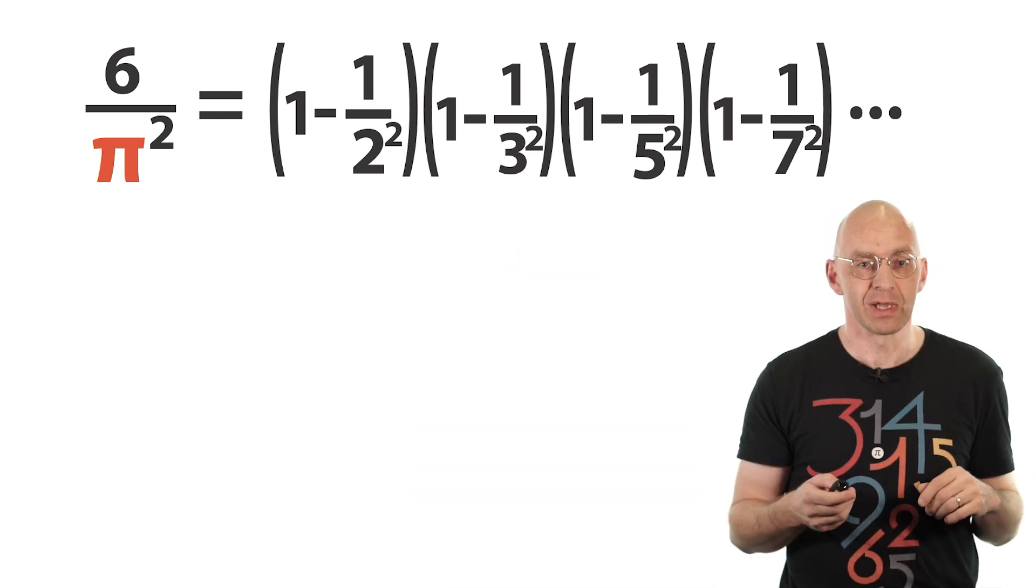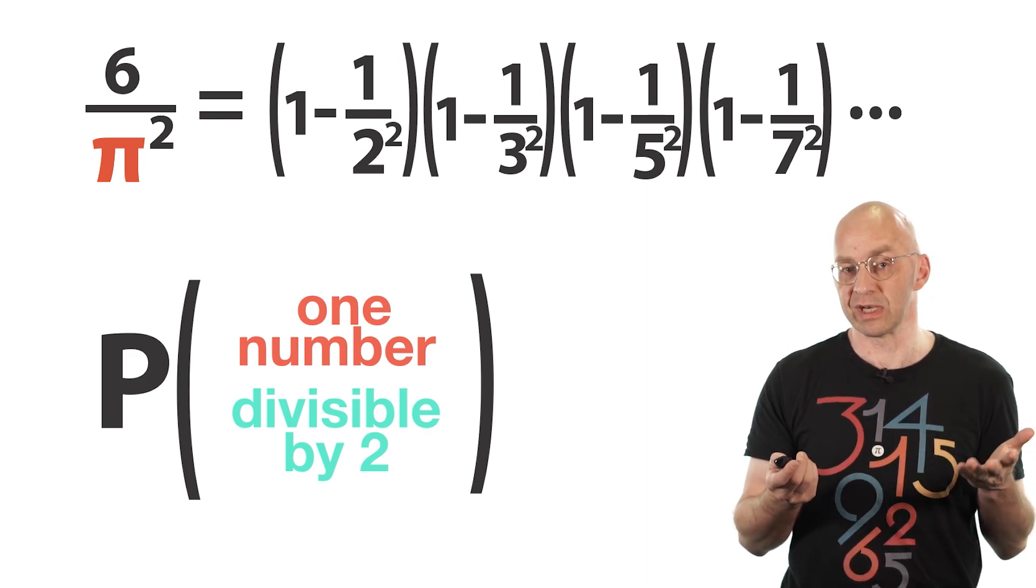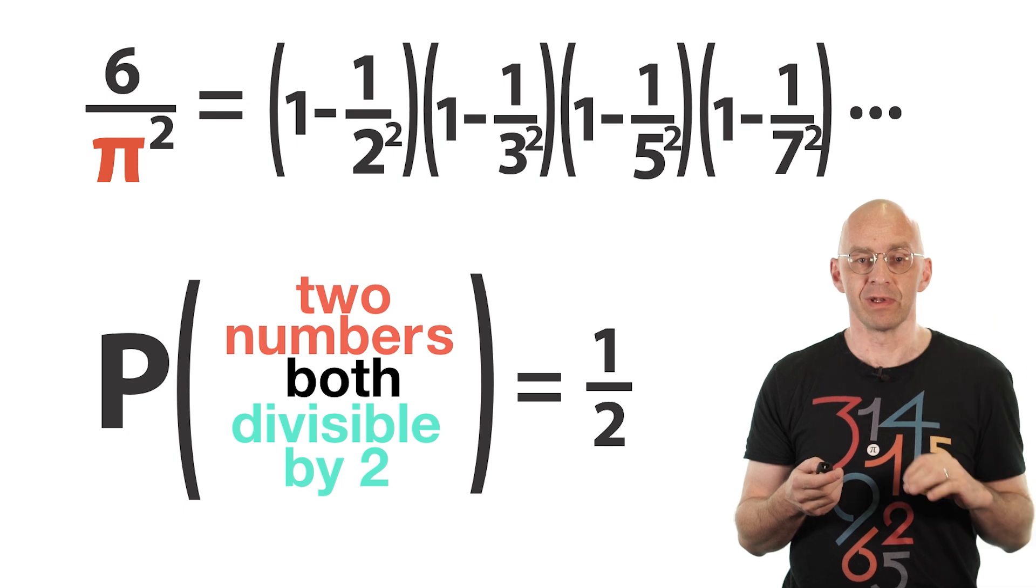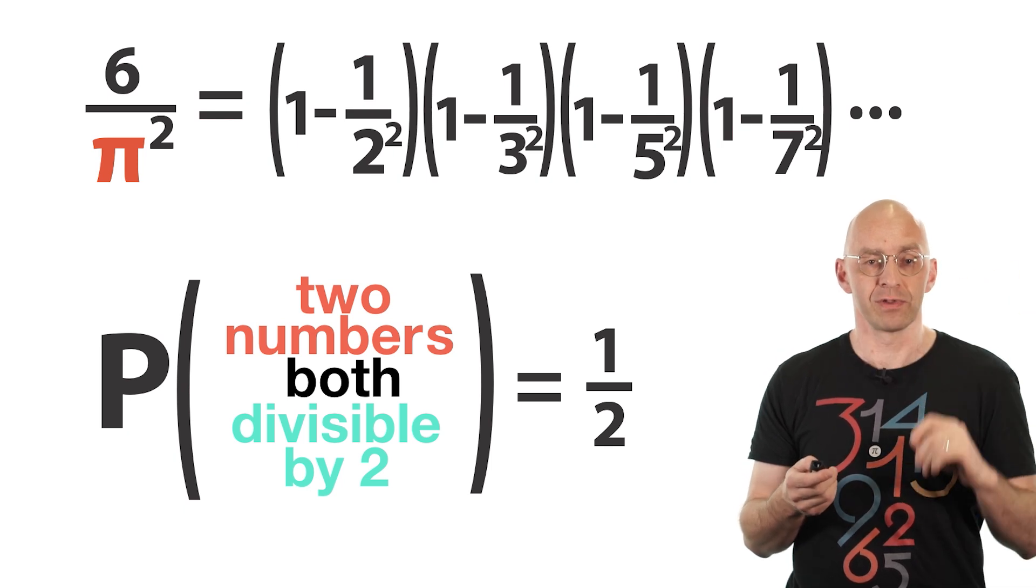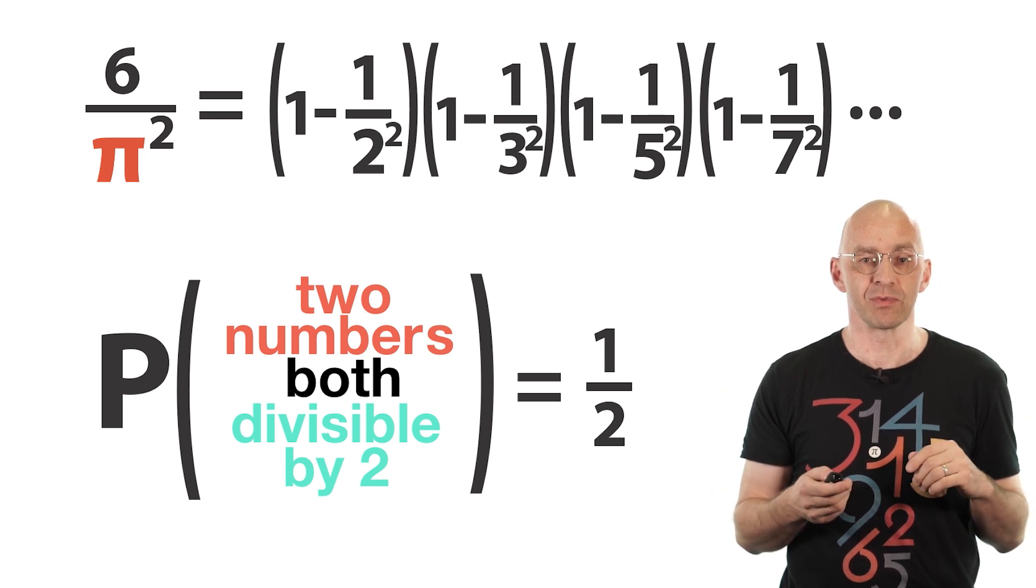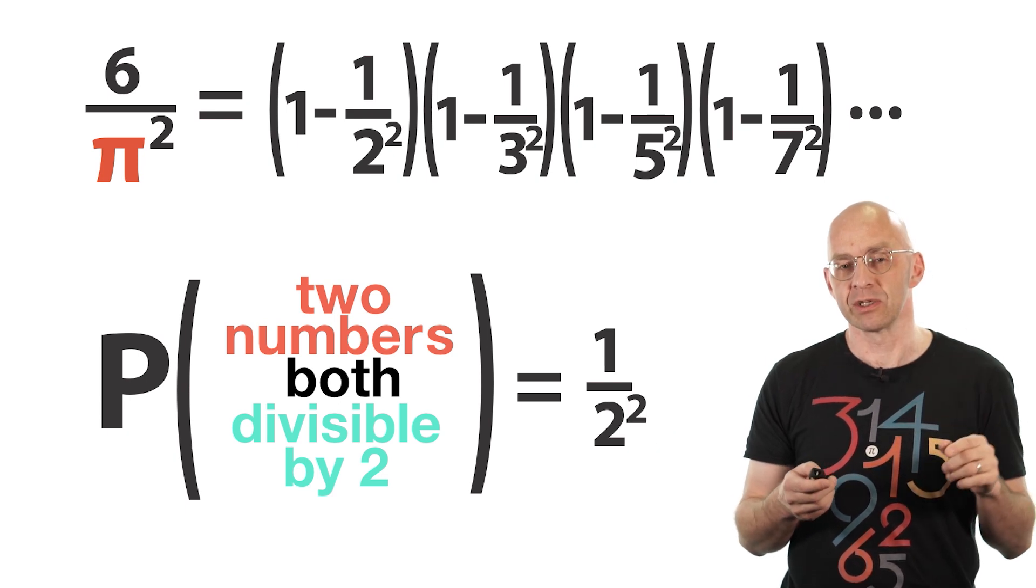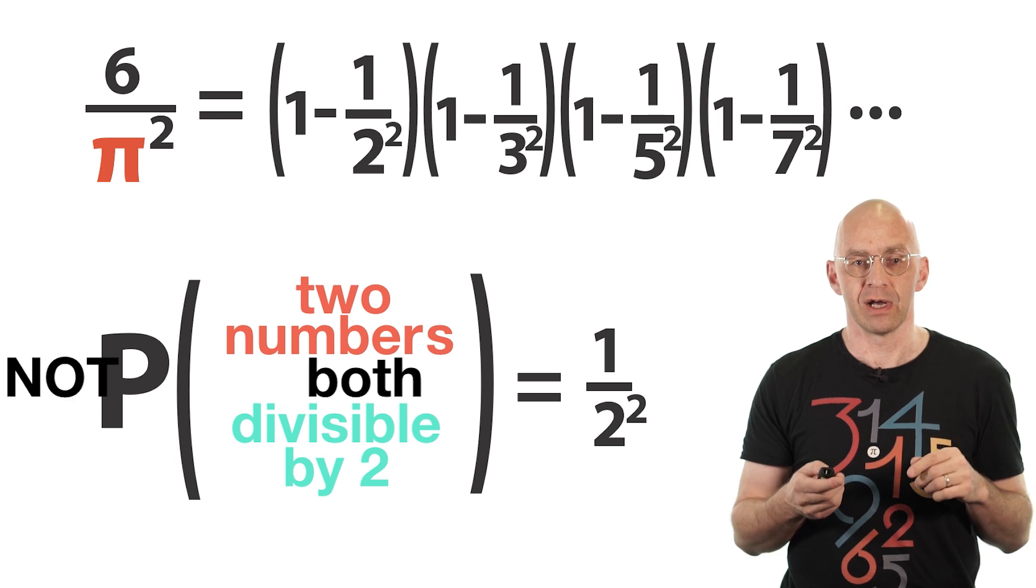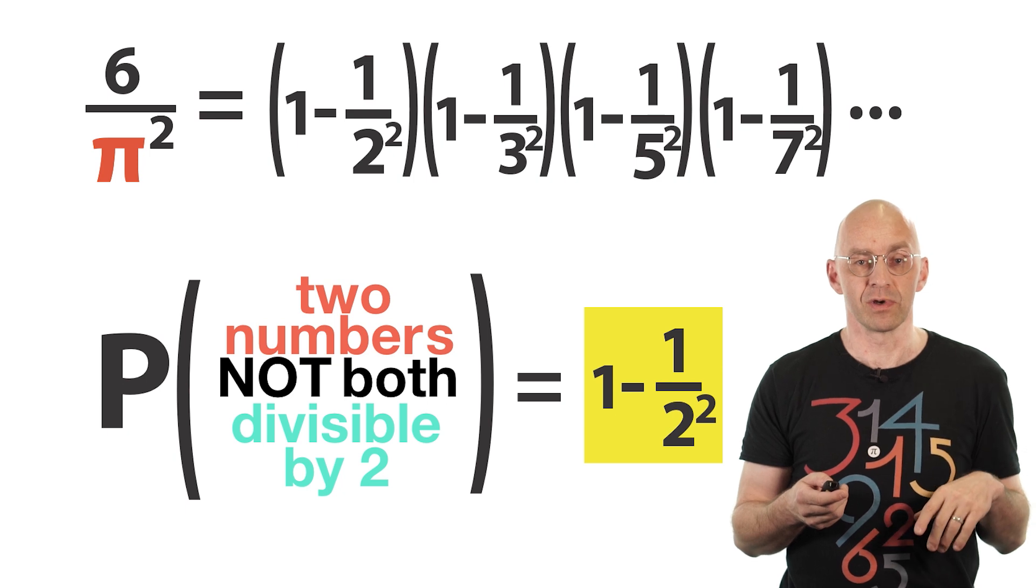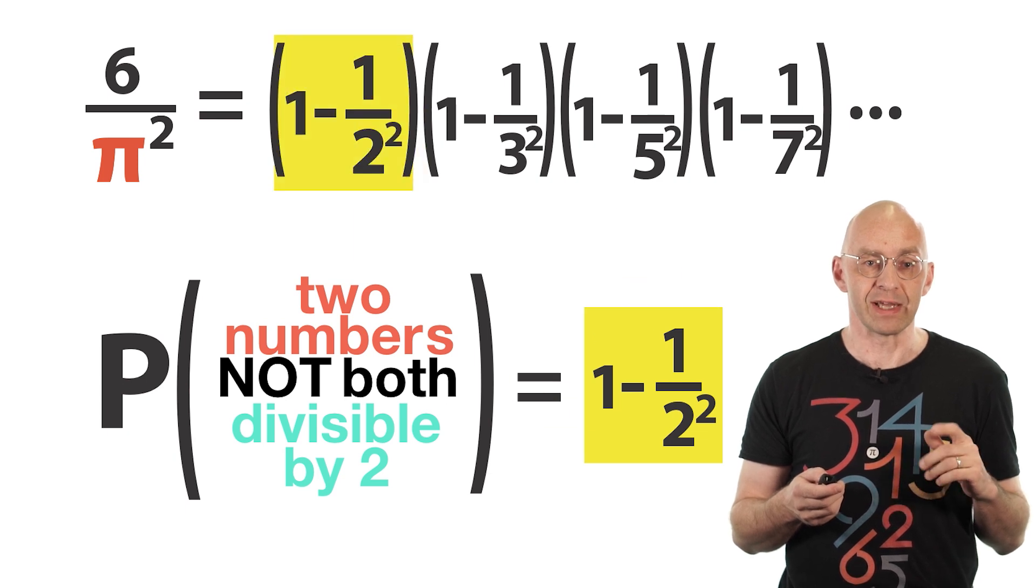Well, let's have a look. The probability of a randomly picked natural number to be even is what? Well, 1 half obviously. What about the probability of two randomly picked numbers to be both divisible by 2? Well, they don't have anything to do with each other. Well, so it's just 1 half times 1 half, which is equal to 1 over 2 squared. How about the probability that not both are divisible by 2? Well, that's simply 1 minus 1 over 2 squared. And you can see something happening, right? That's just our first factor up there.